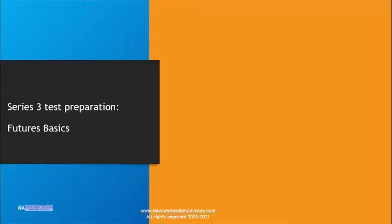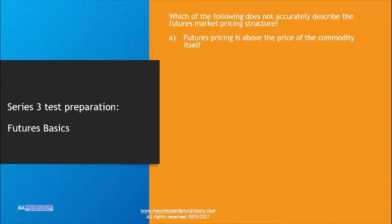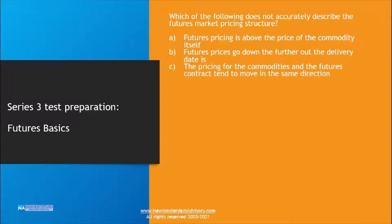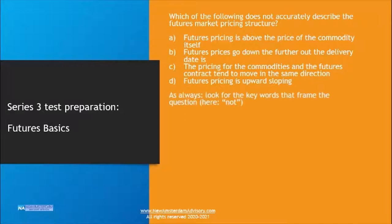Let's look at a test question for your Series 3 test, this time around Futures Basics. The question could be: which of the following does not accurately describe the Futures Market pricing structure? The options are: futures pricing is above the price of the commodity itself; futures prices go down the further out the delivery date; pricing for commodities and futures tend to move in the same directions; and futures pricing is upward sloping.